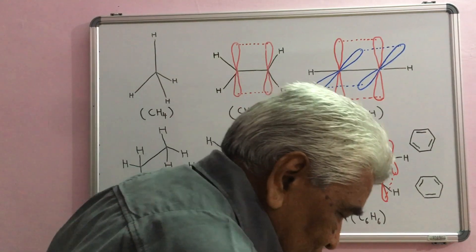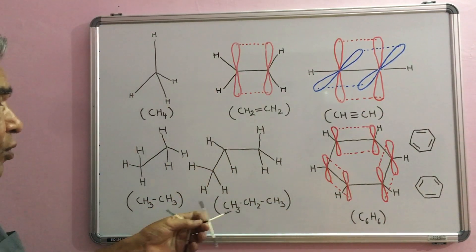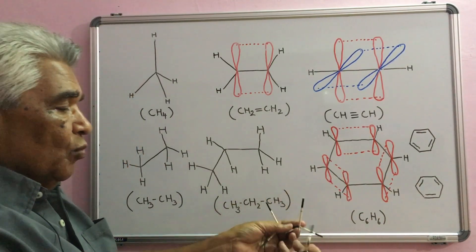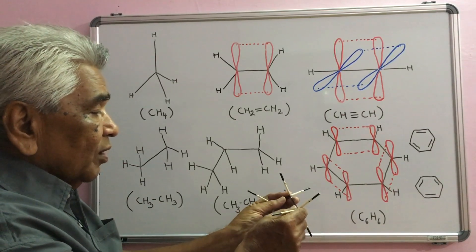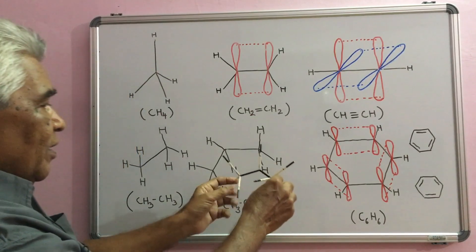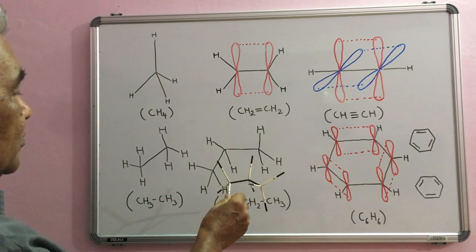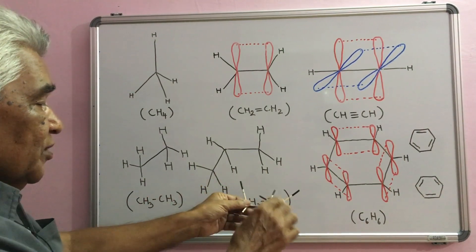If you want to see propane molecule, then this sp3 overlaps with sp3 of third carbon atom which is also sp3 hybridized, and the molecule of propane looks like this. You can see they are not in the same plane.